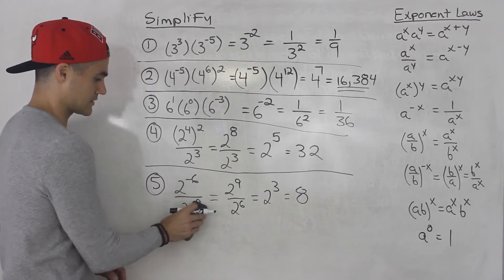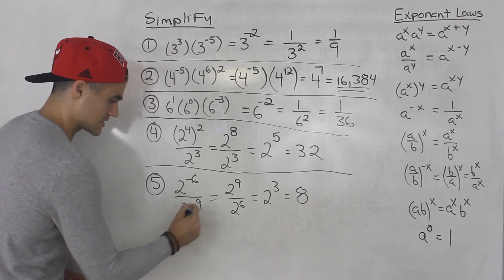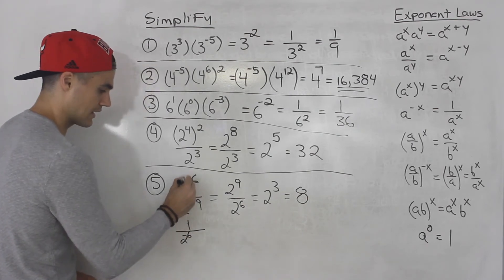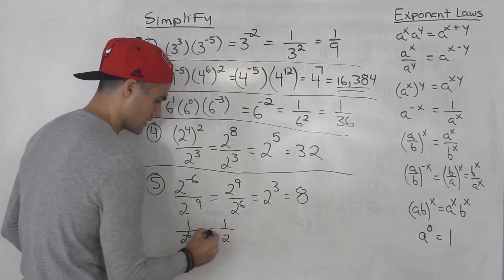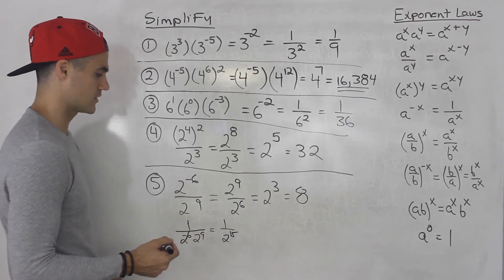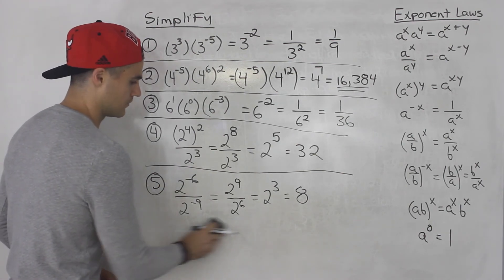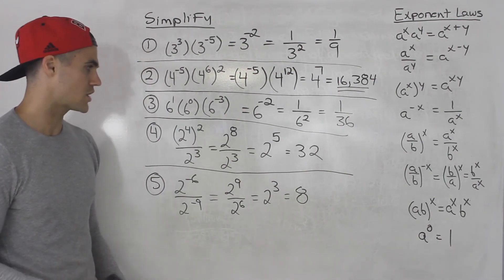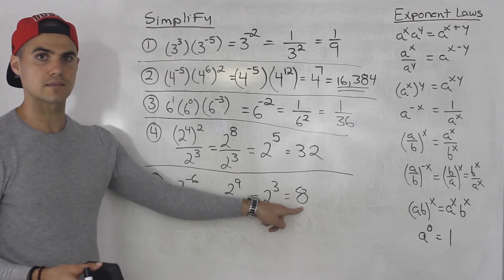Now, what if the denominator was just positive nine? Then we would keep it in the denominator — bring the two to the negative six down, and two to the nine would stay, giving something like one over two to the fifteen. But because both exponents were negative here, we bring both over and end up with two to the power of three, which equals eight. You can always check your answers by plugging in the original expression and seeing if you get the same amount.